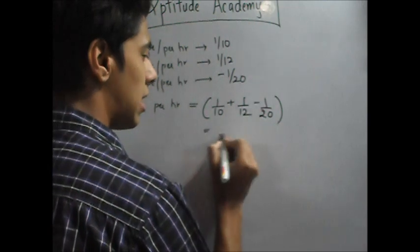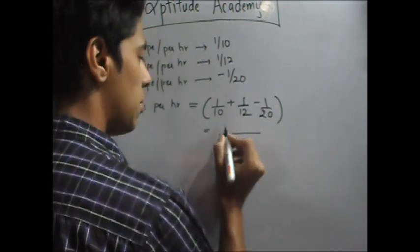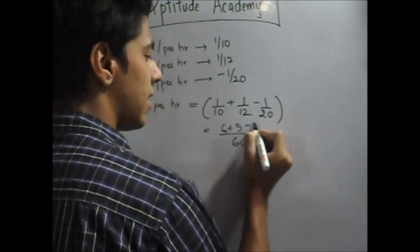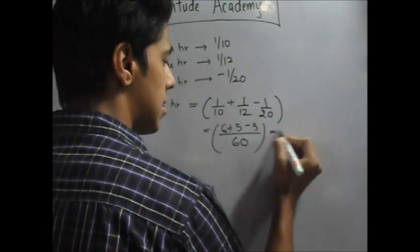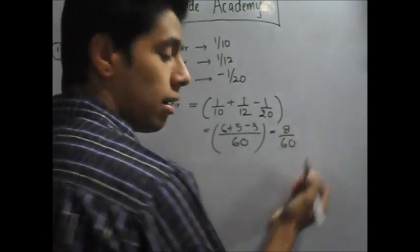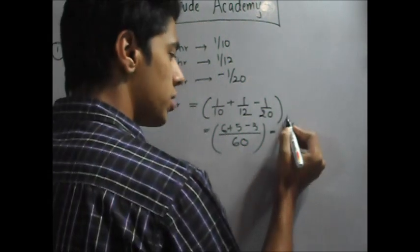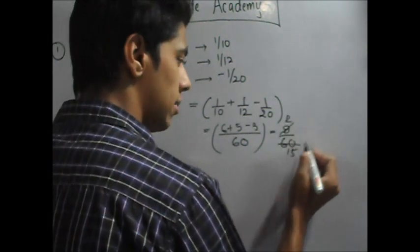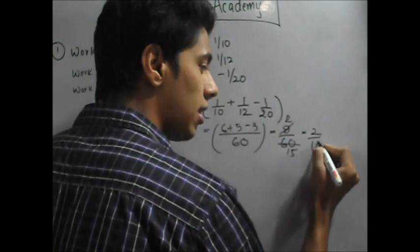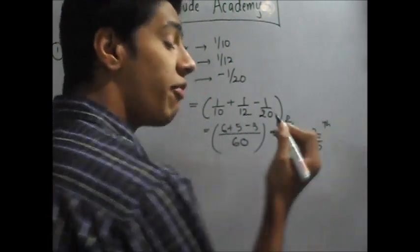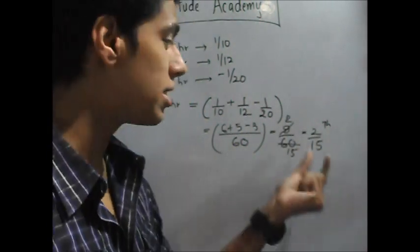If you take an LCM, it comes out to be 60. This will be 6 plus 5 minus 3. This is 8 over 60. I cancel it out, so 2 by 15th of the tank is filled every hour. How can I say filled? Because it's a positive quantity.